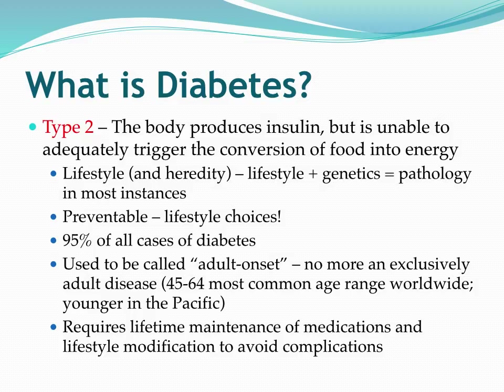Whereas type 1 diabetes is largely hereditary, type 2 diabetes is primarily lifestyle linked. There are some hereditary predispositions with type 2 diabetes — if you have a close family member with type 2 diabetes or a family history of it, genetics does play a role. But largely that genetic predisposition can actually be overcome by living a moderately healthy lifestyle.